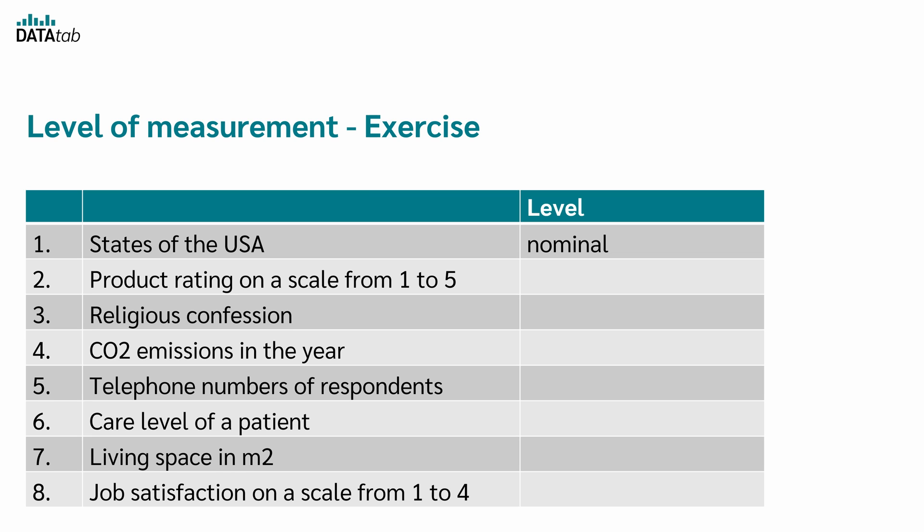Next, we have product ratings on a scale from 1 to 5. This is an example of ordinal data. Here the numbers do have an order or rank. 5 is better than 1, but the intervals between the ratings are not necessarily equal. Moving on to religious confession. Like the states, this is also nominal. The categories here, such as different religions, are for categorization and do not imply any order.